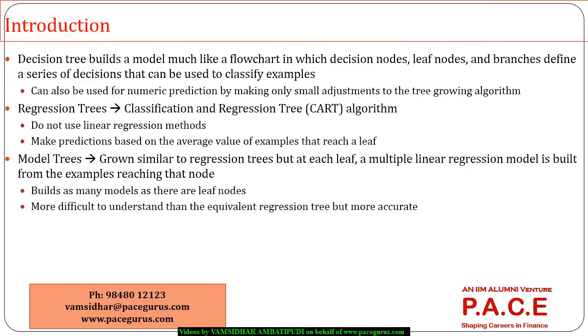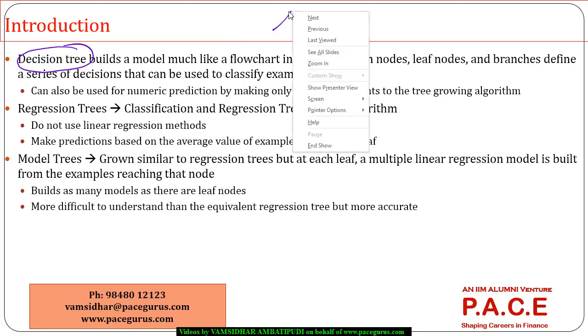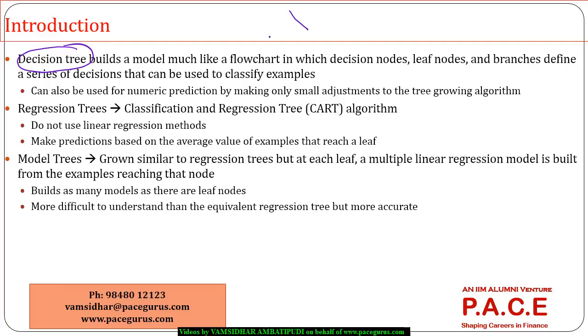Coming to the understanding, when we have discussed about the decision trees, we said the decision tree is more like a tree. The root node, branch nodes and finally the leaf node. So this is how the decision tree is coming, more like a flowchart.